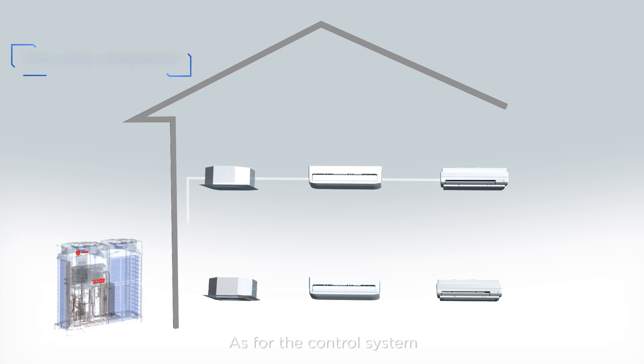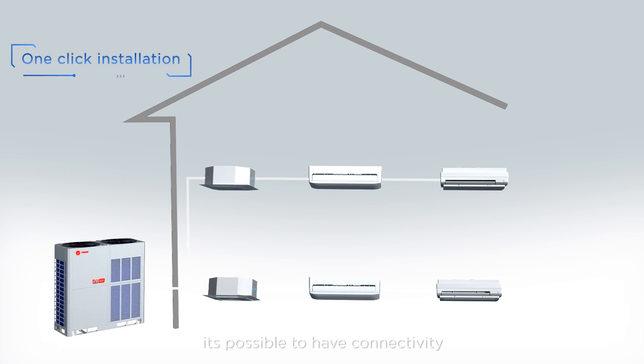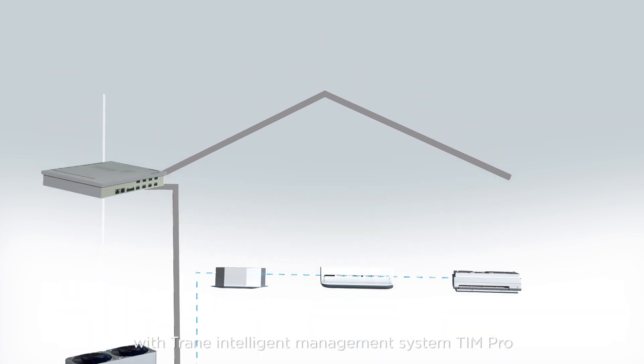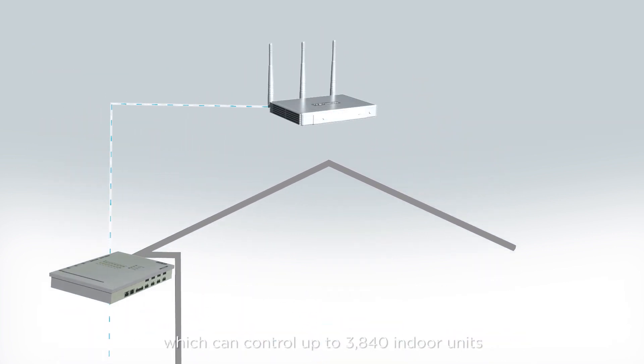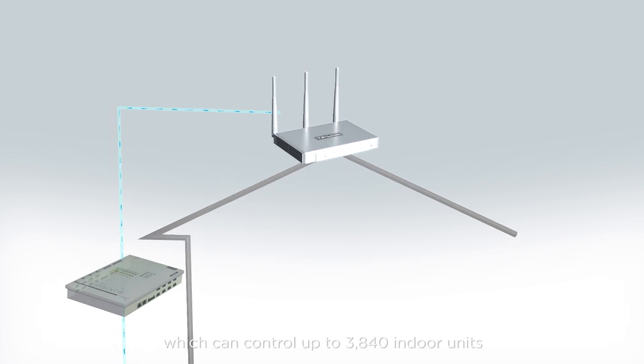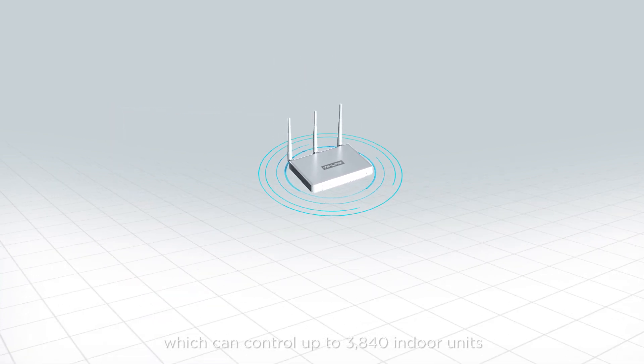As for the control system, it's possible to have connectivity with Train Intelligent Management System TIM Pro, which can control up to 3840 indoor units in one system.